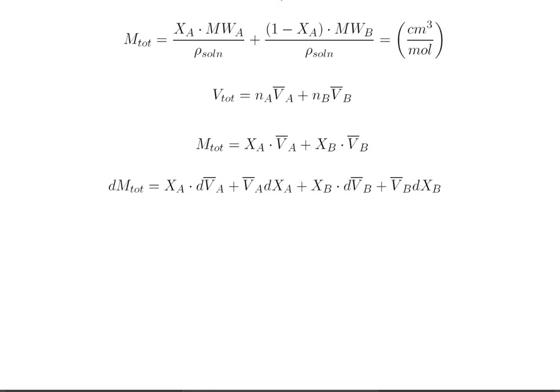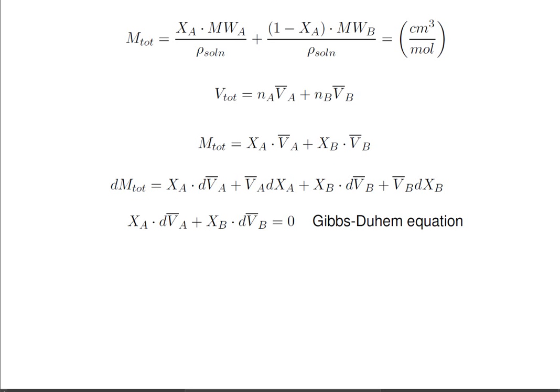We can differentiate to get the complete differential. Here I've shown mole fraction of A times the change in the partial molar volume of A, and done the same thing with B — simply taking the complete differential of each term to get this expression. By the Gibbs-Duhem equation for binary mixtures at constant temperature and pressure, x of A times dV of A plus x of B times dV of B equals zero. If you don't know this equation, you can find a reasonable explanation at Wikipedia. Gibbs-Duhem allows us to simplify this expression, because x of A dV of A plus x of B dV of B equals zero, leaving the remaining terms.